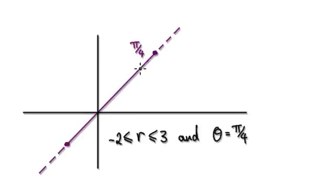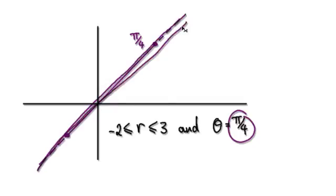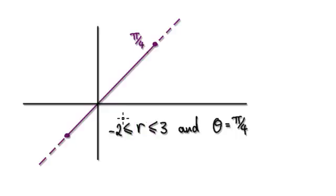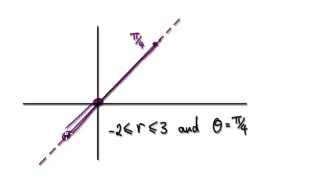Another example. In this one, theta has to be dead on pi over four. Dead on pi over four would be this line here. But there's a restriction on the radius: the radius must be greater than negative two. So let's say the distance from here to here is negative two, and then the distance from here to here is three. So it has to be this line here. The distance from the origin to here is negative two — or if you want, you can think of it as the distance of two, but it is negative two.